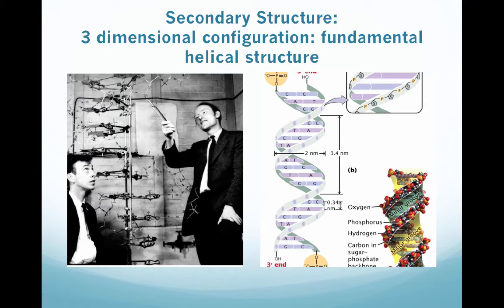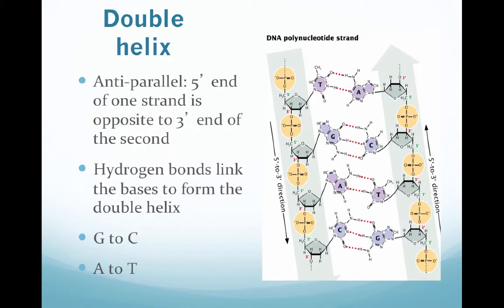Secondary structure really refers to the three-dimensional configuration, or the helical structure of DNA. And this was, actually, everybody credits Watson and Crick with this discovery, but actually one of the scientists that didn't get awarded the Nobel Prize for this discovery was Rosalind Franklin, and it was because she actually died, very sad, before the Nobel Prize had been awarded. So you can't earn the Nobel Prize posthumously, unfortunately.